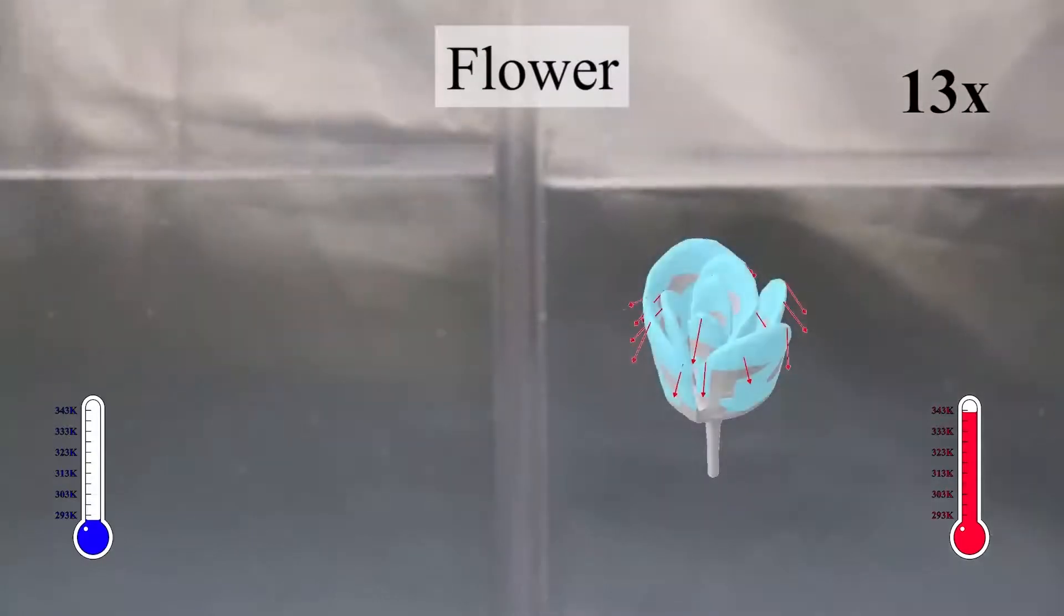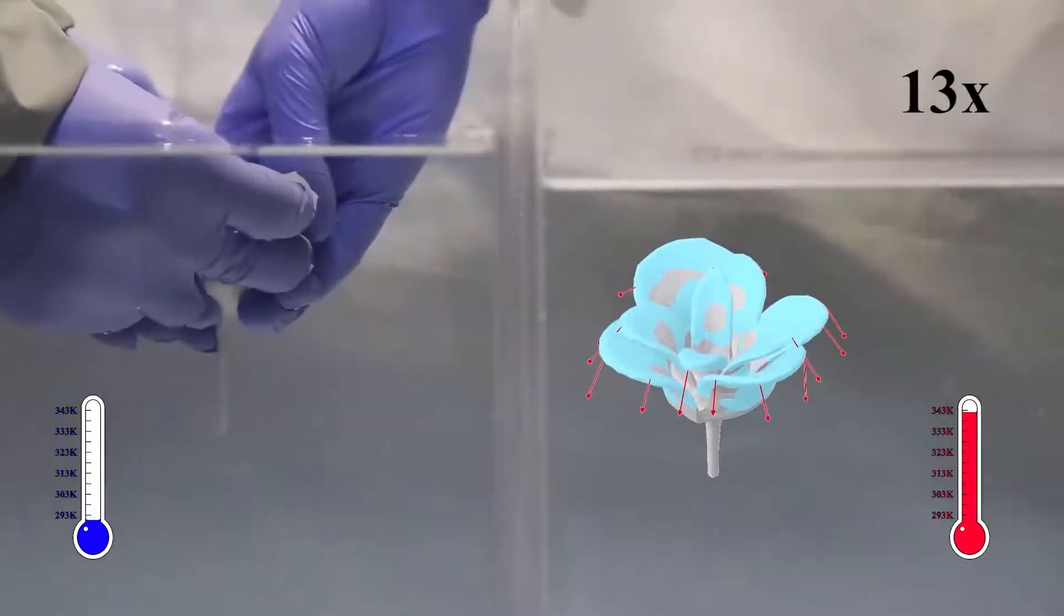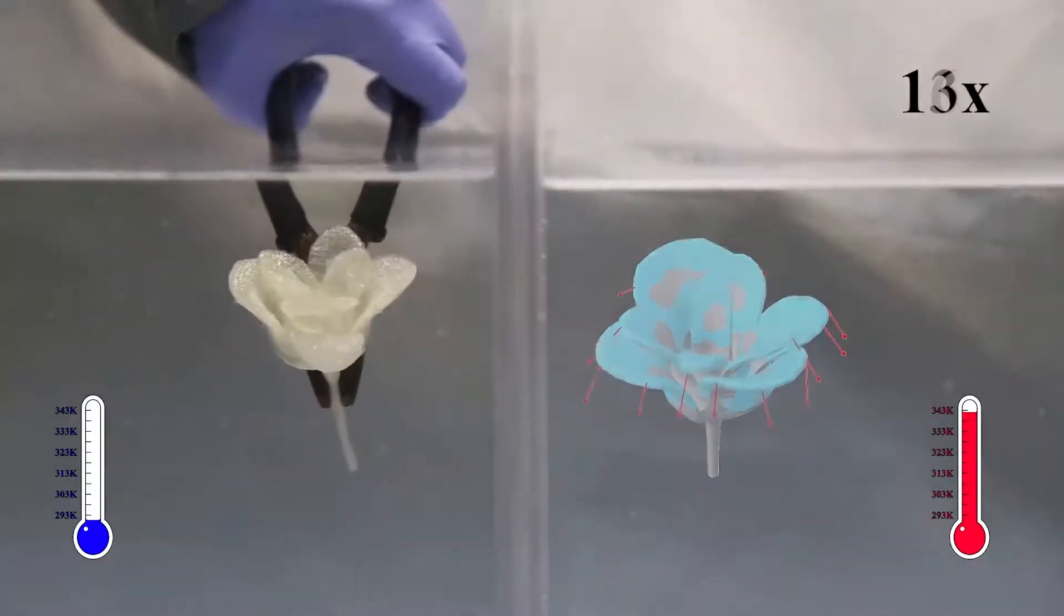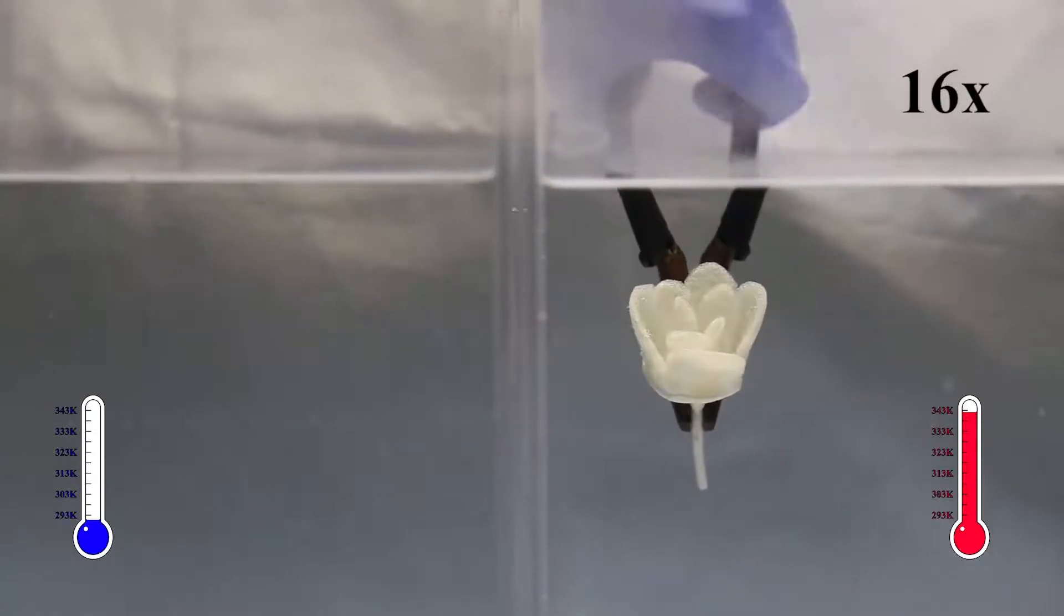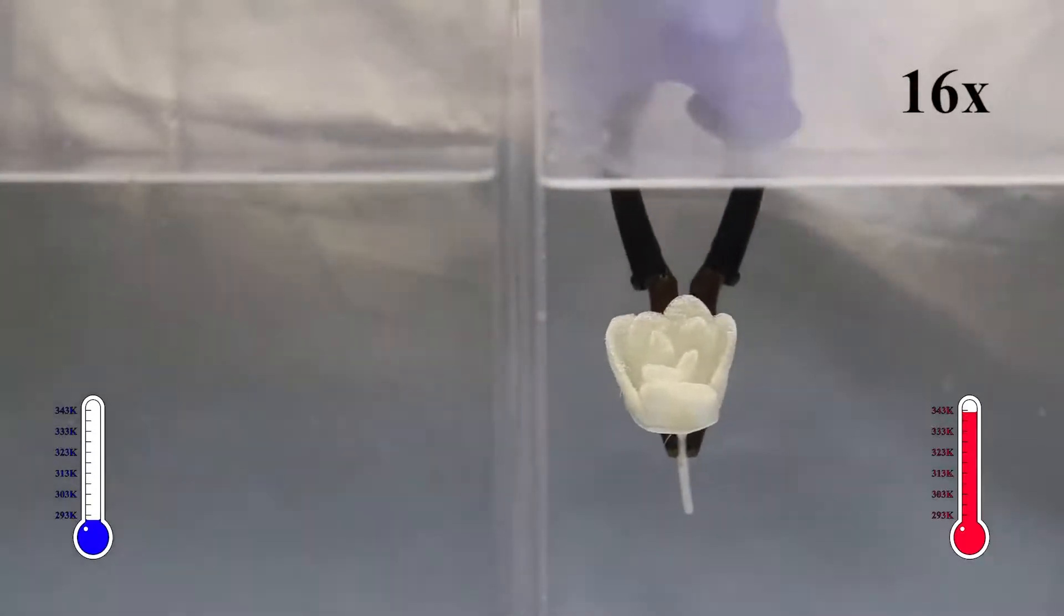Our approach can be used in designing complicated objects like the flower model shown here. The blossomed flower closes its petals when it reaches a high temperature.